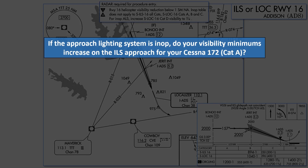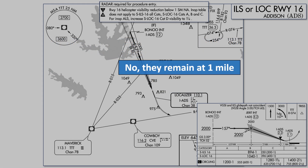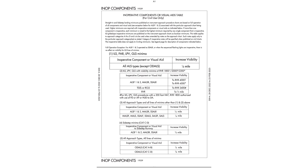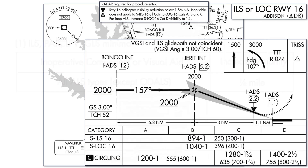Question 3: If the approach lighting system is inoperative, do your visibility minimums increase on the ILS approach for your Cessna 172, which is a CAT-A aircraft? Yes to 1.25 mile, yes to half a mile, or no, they remain at 1 mile? Our visibility minimums stay at 1 mile. Normally, inoperative equipment like failed approach lighting is mentioned in the inop components table, showing that for an ILS we increase visibility minimums one quarter mile. But the approach plate notes that the inop table doesn't apply for the ILS, because we already have an unconventionally high visibility minimum for an ILS, so there's no need to lengthen it further.